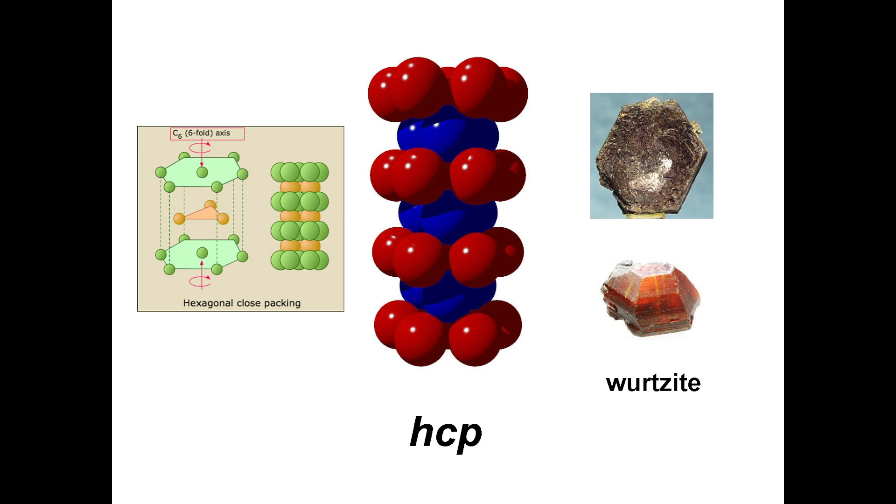Notice that the ABAB layers in the column are defined by layers of hexagons and triangles of close pack spheres. A key point here is that all the triangles are oriented in the same direction.